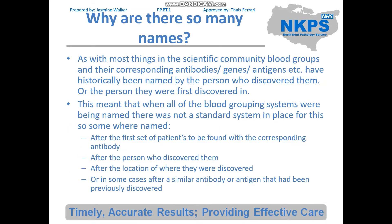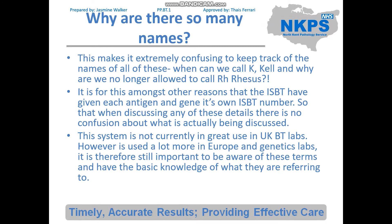As with most things in the scientific community, blood groups and their corresponding antibodies, genes, and antigens have historically been named by the person who discovered them or the person they were first discovered in. This has meant that when all the blood grouping systems were being named, there wasn't a standard system in place. Some were named after the first patients found with the corresponding antibody, after the discoverer, after the location, or after similar previously discovered antigens or antibodies.